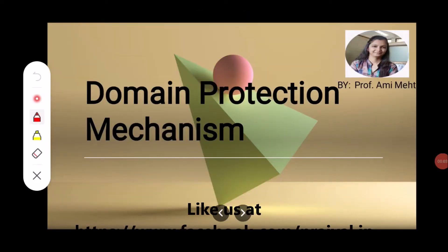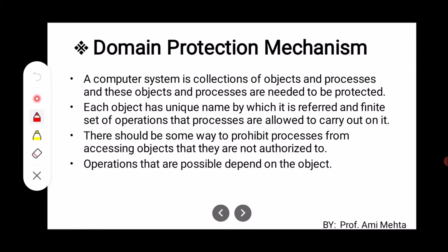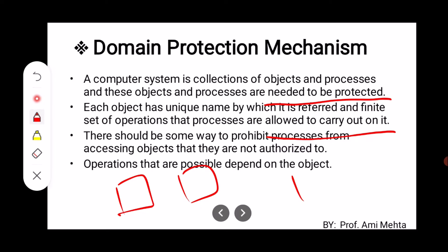Hello everyone, myself Ami Mehta. In Operating System, let us discuss Domain Protection Mechanism. A computer system is a collection of objects and processes, and these objects and processes need to be protected. Each object has a unique name by which it is referred, and a finite set of operations that processes are allowed to carry out on it. For example, objects like printer, scanner, and other input/output devices, or a file named 'abc' — all have unique names.